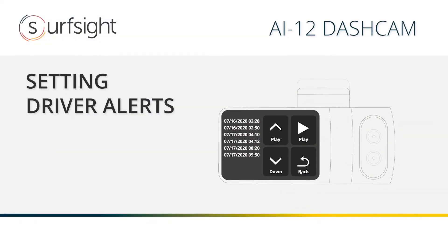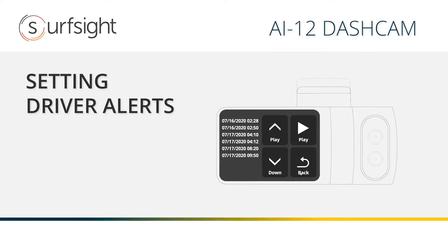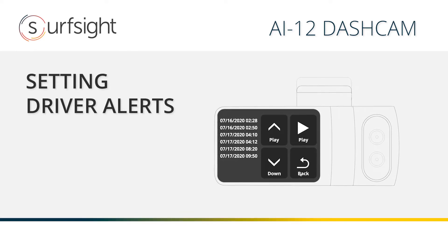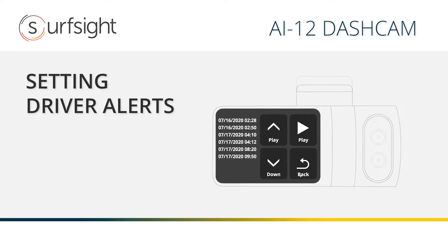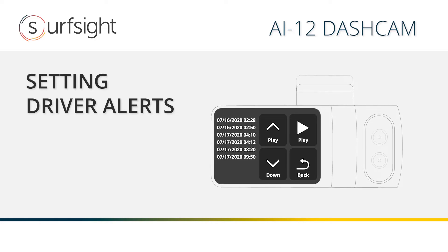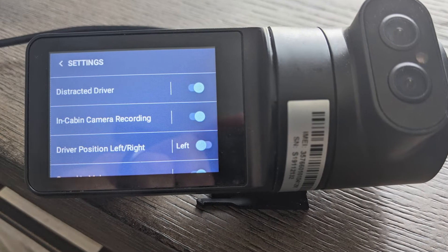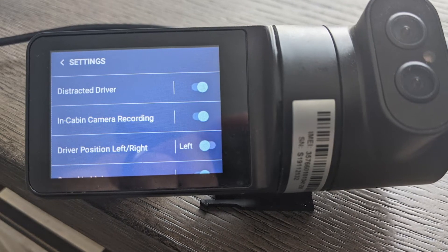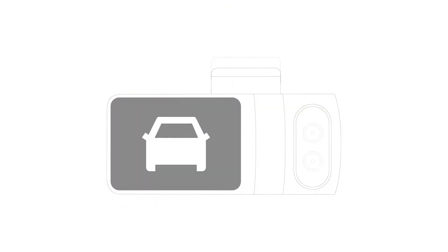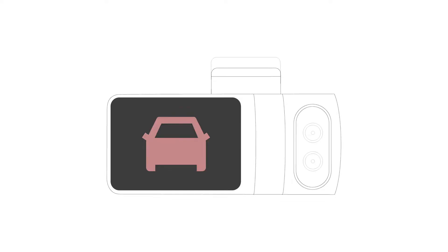From the settings menu, you can adjust the driving alerts function. These alerts help empower drivers to self-correct risky driving behaviors while on the road. They also provide insights into risk within your fleet. A white vehicle icon will be displayed on the screen while driving. In case of a risky driving event, such as a sharp turn or unsafe driver behavior, the car icon will turn red, indicating a visual alert for the driver.